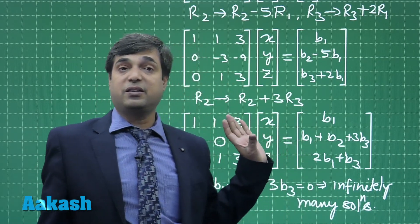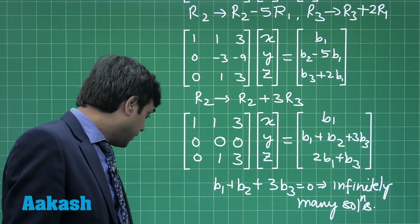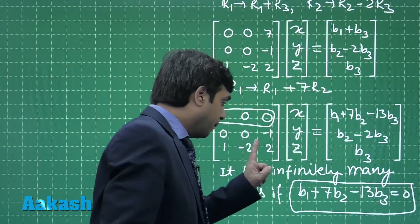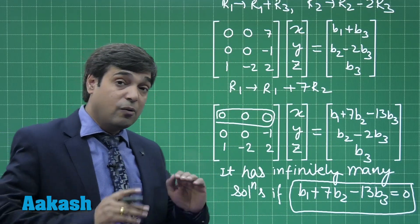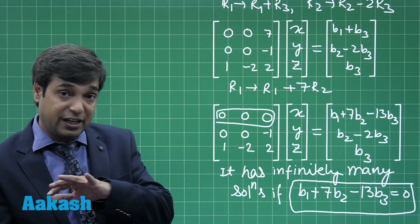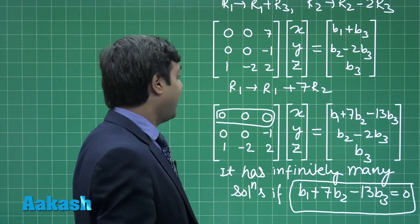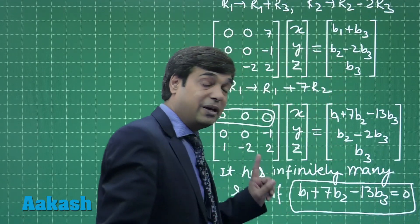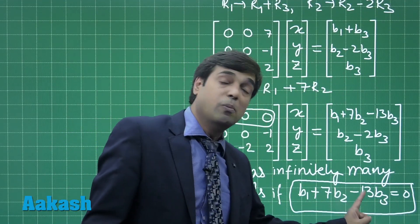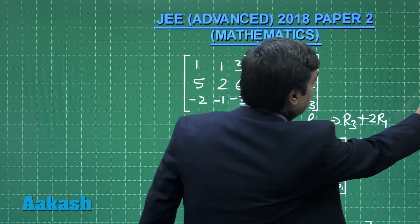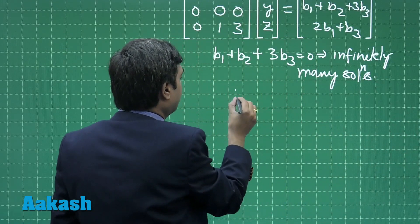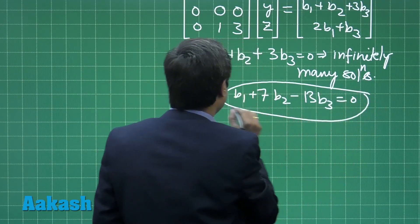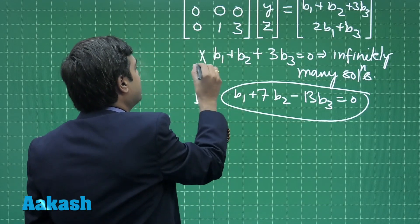So b1 plus b2 plus 3b3 must be 0 for Option B. But from the given system of equations we derived that b1 plus 7b2 minus 13b3 equals 0 is required. For the same set of b1, b2, b3, we are not going to get infinitely many solutions in Option B, since Option B does not give b1 plus 7b2 minus 13b3 equals 0. Hence Option B is not correct.